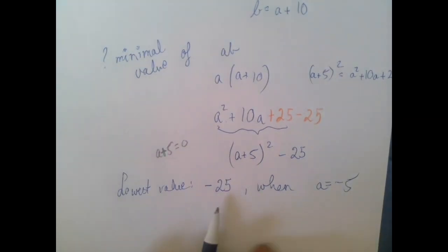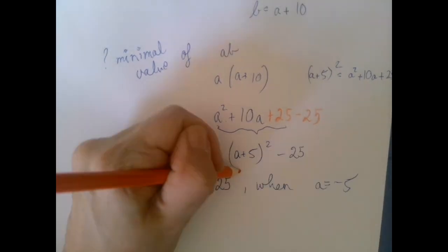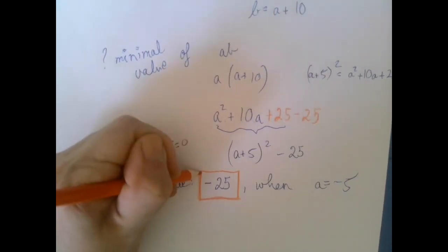Sometimes you are asked both, sometimes just the lowest value. But it's good to get both of them. In this particular case, our answer is negative 25, the problem is over.